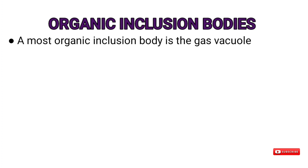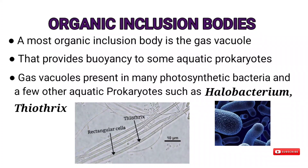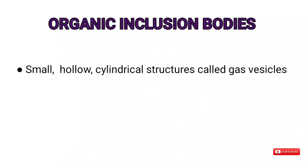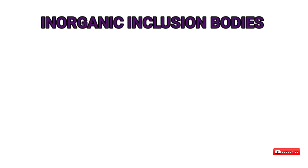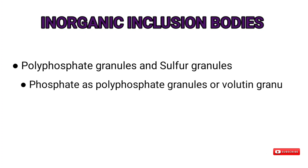A notable organic inclusion body is the gas vacuole, a structure that provides buoyancy to some aquatic prokaryotes. Gas vacuoles are present in many photosynthetic bacteria and a few other aquatic prokaryotes such as Halobacterium (a salt-loving archaeon) and Thiothrix (a filamentous bacterium). Gas vacuoles are aggregates of enormous numbers of small hollow cylindrical structures called gas vesicles.